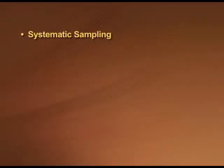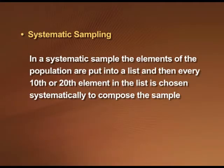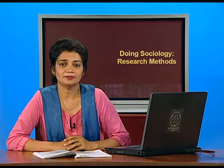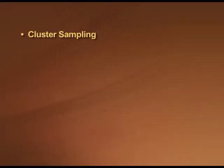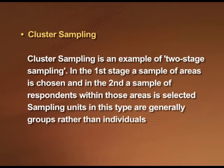The third type is systematic sampling. In a systematic sample, the elements of the population are put into a list and then every tenth or twentieth element is chosen systematically to compose a sample. The fourth type is cluster sampling, which is also an example of two-stage sampling. In the first stage a sample of areas is chosen, and in the second stage a sample of respondents within those areas is selected. Sampling units in this type are generally groups rather than individuals.